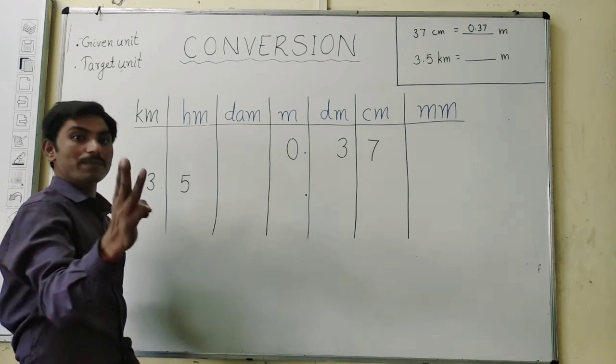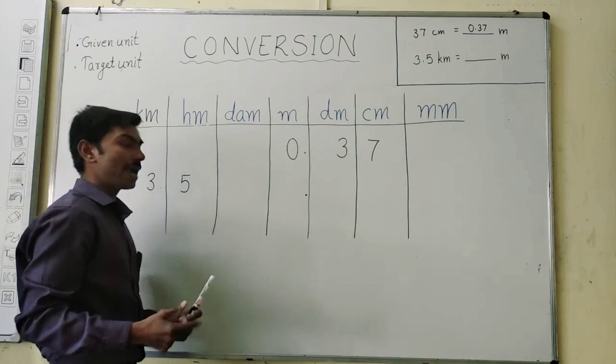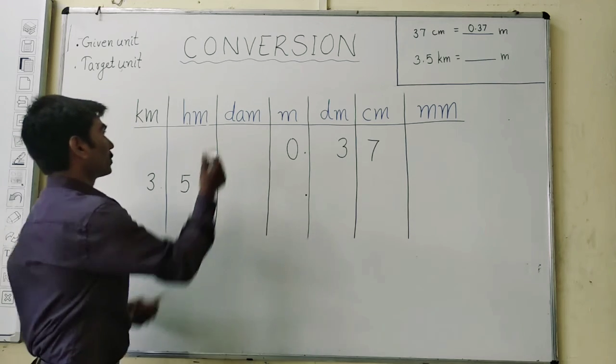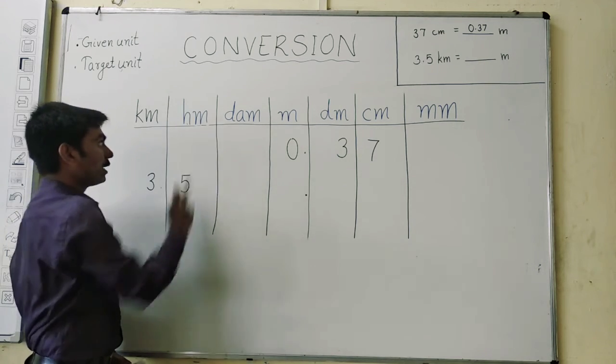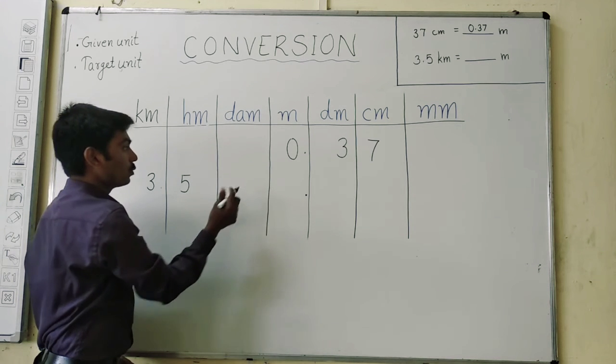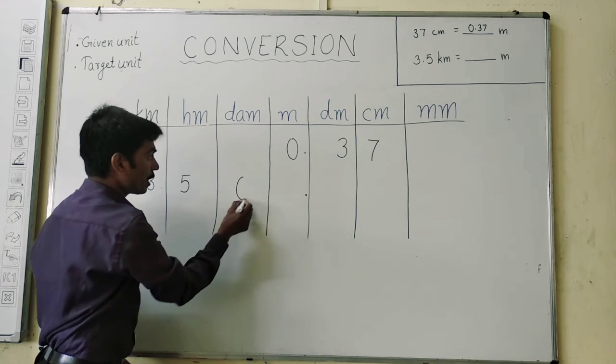The third step is to give 0 as required. Where there is no any digit, we have to give 0. So in km column, there is digit. In hectometer column, there is no digit. In decameter, there is no digit. So put 0 here.